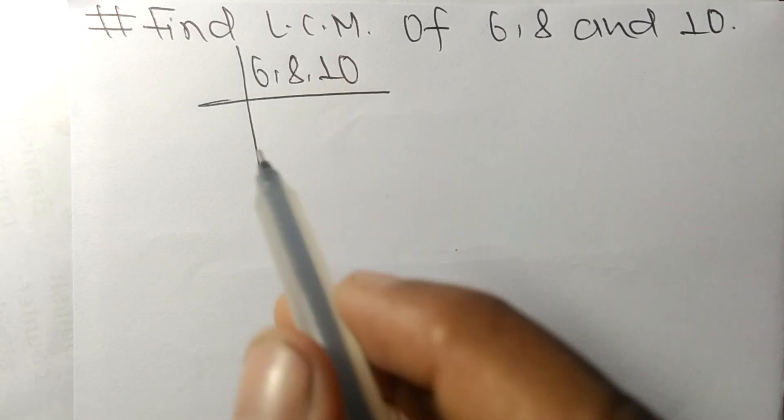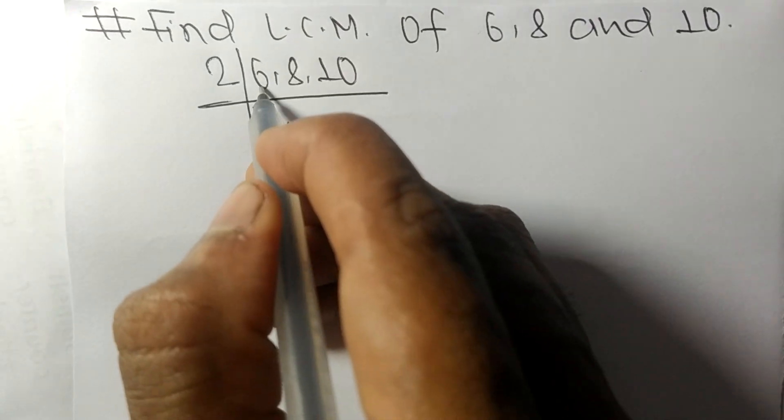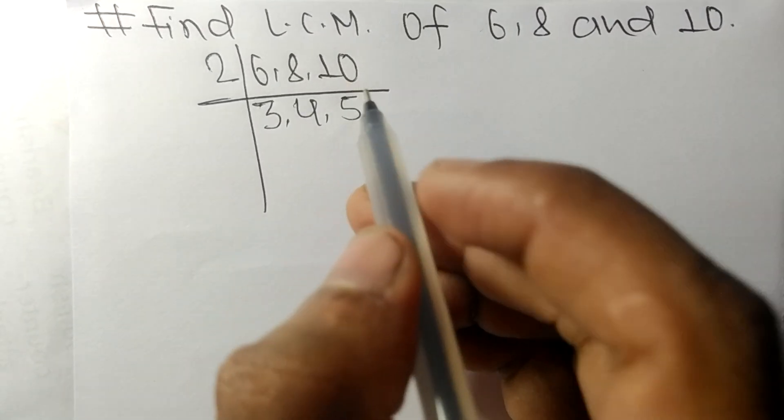2 times 3 means 6, 2 times 4 means 8, 2 times 5 means 10.